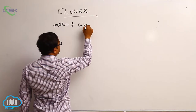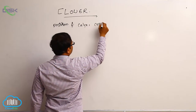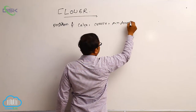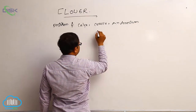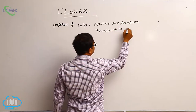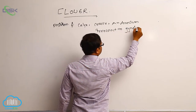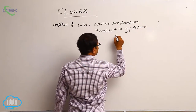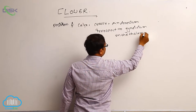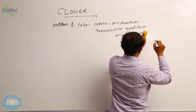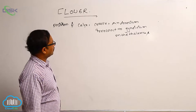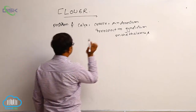Calyx, Corolla and Androecium, irrespective to that, Gynoecium, and the Thalamus. So the position of Calyx, Corolla, Androecium, irrespective to that, Gynoecium and the Thalamus — these are the key floral parts we will consider.